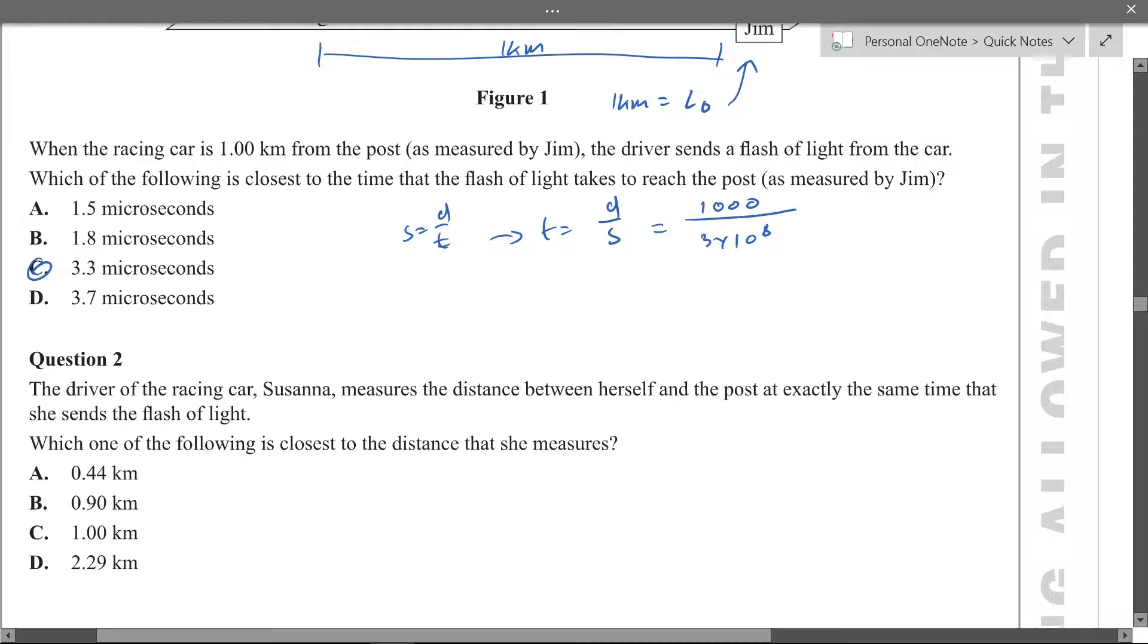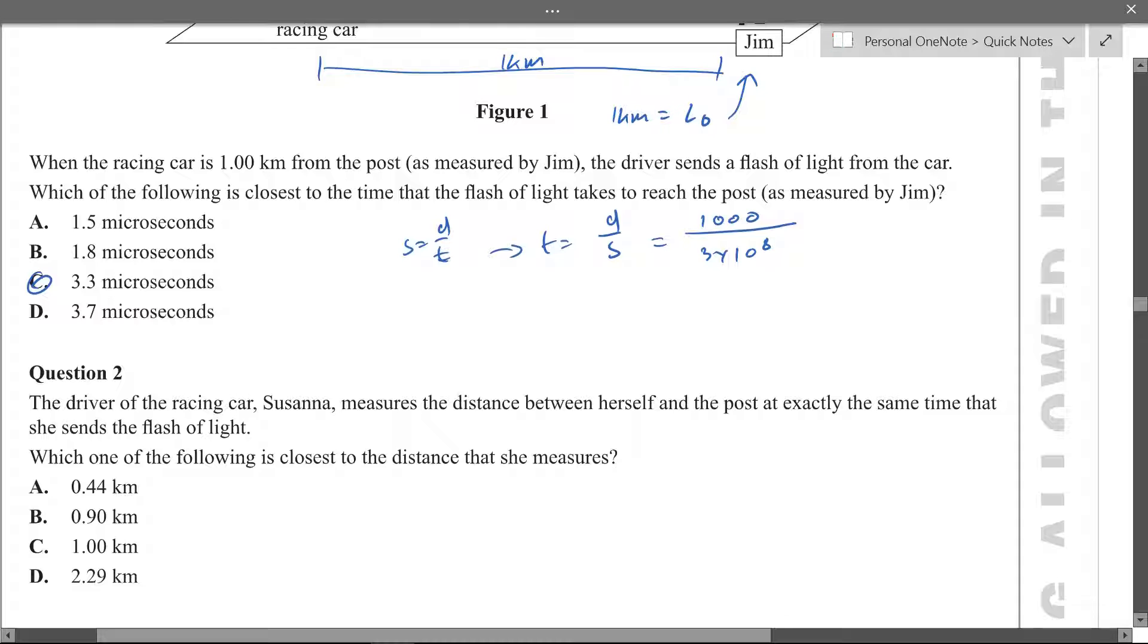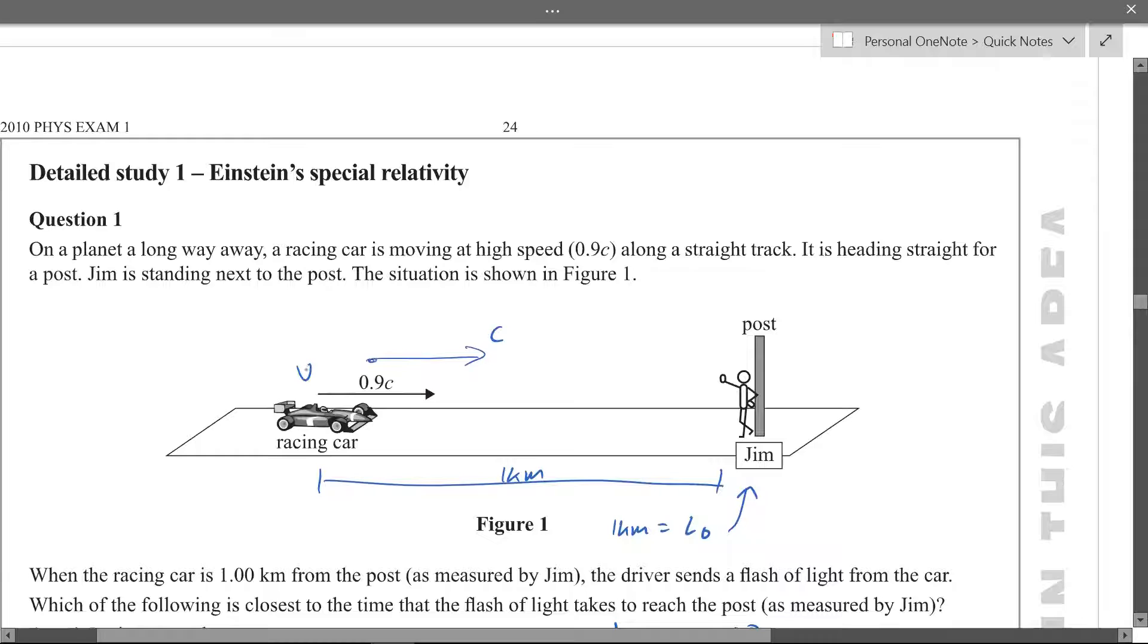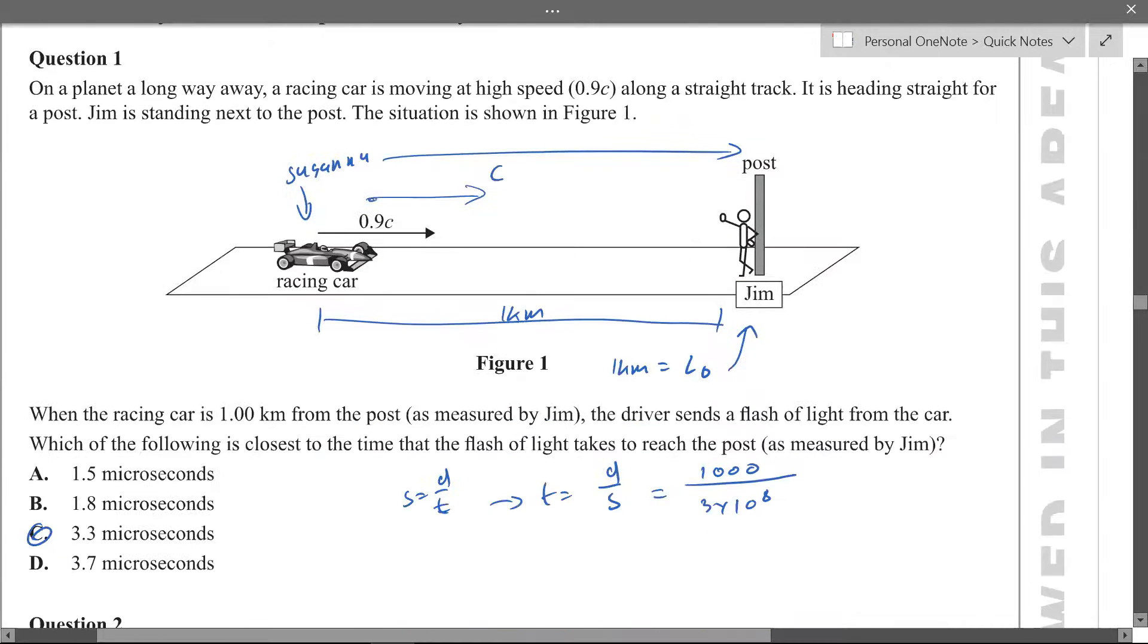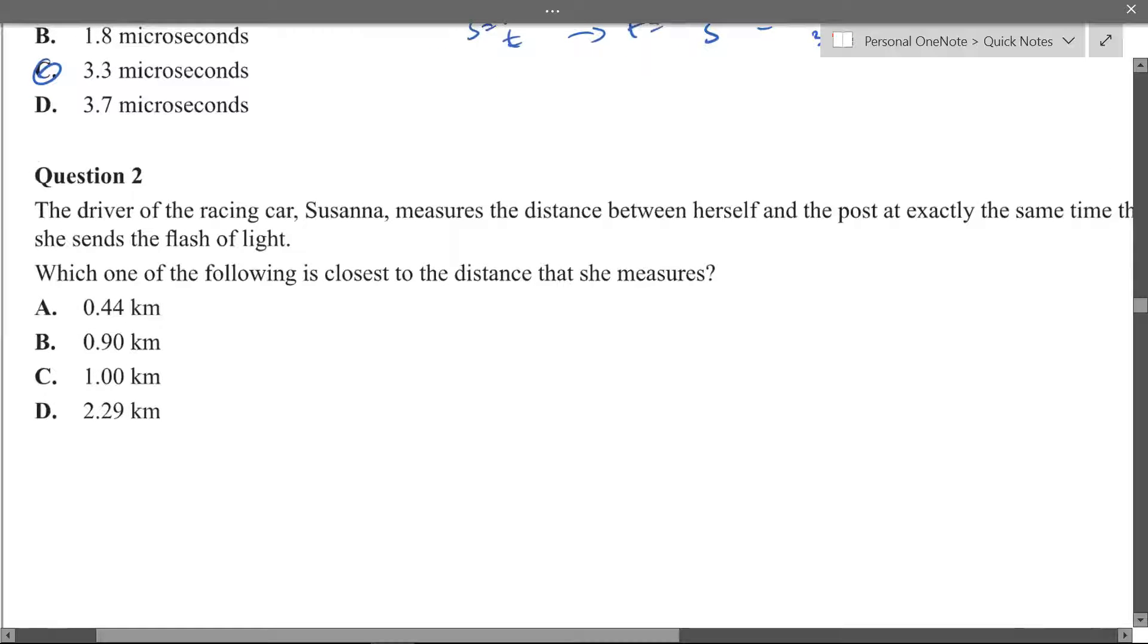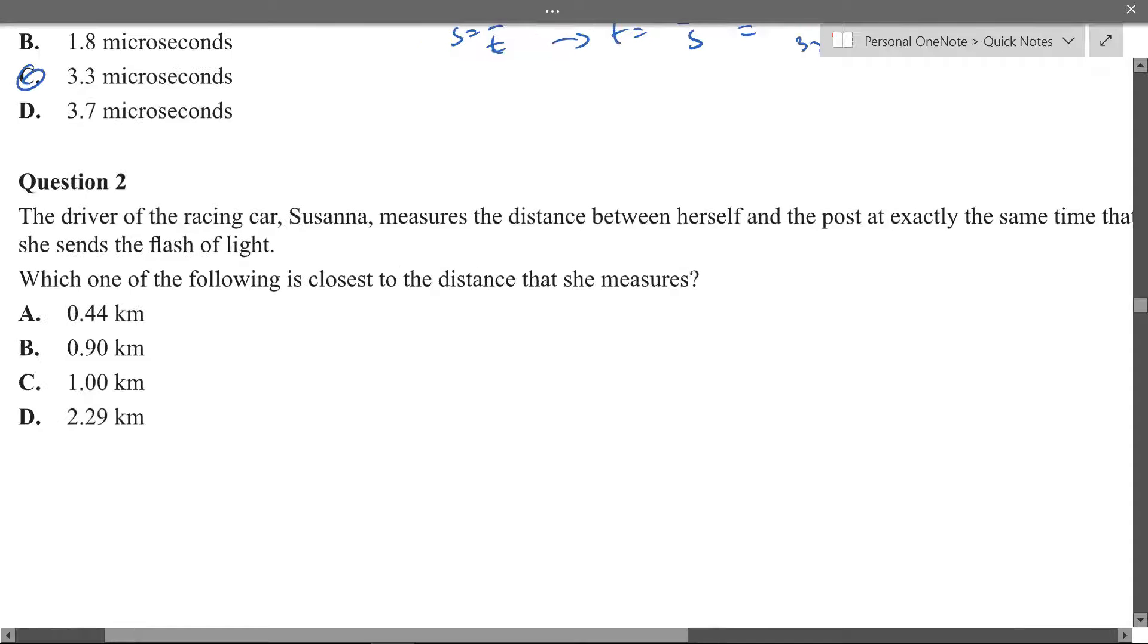So Susanna measures the distance between herself and the post at exactly the same time that she sends flash of light. So Susanna's in the car and she measures this distance at the exact same time that she sends the light and it's asking for the closest distance that she measures. So if she's at the point that she sends the light, L0 we know is 1k so 1000 metres and if Susanna's the one measuring the distance then she will be L because she's the one who will feel the relativistic effects because she's not at rest compared to the distance that she's measuring.